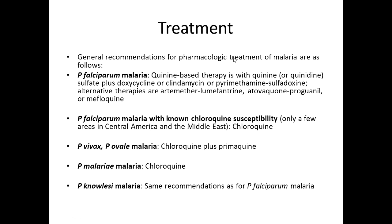Treatment: General recommendations for falciparum malaria include quinine-based therapies with quinine or quinidine sulfate plus doxycycline, clindamycin, or pyrimethamine-sulfadoxine combination. Alternative therapies include artemether-lumefantrine, atovaquone-proguanil, or mefloquine. In areas with chloroquine susceptibility, chloroquine is used; in areas with chloroquine resistance, alternatives like artemether-lumefantrine are preferred. For P. vivax, we use chloroquine plus primaquine. For P. malariae, chloroquine alone. For P. knowlesi, the same recommendations as for P. falciparum.